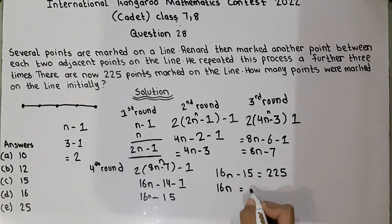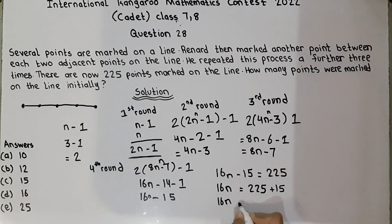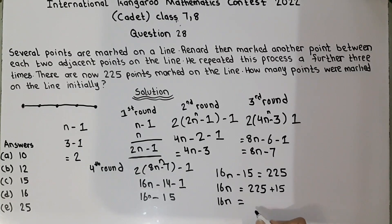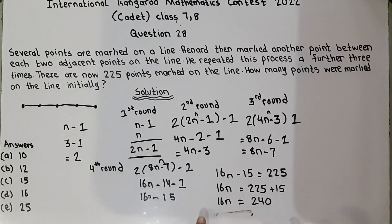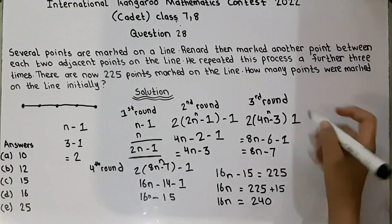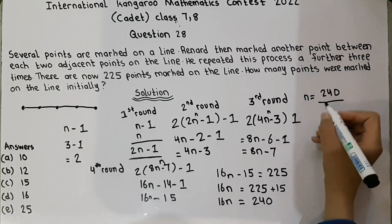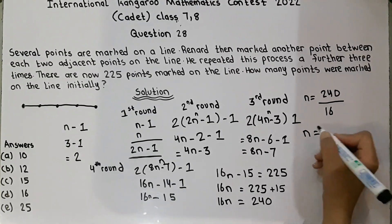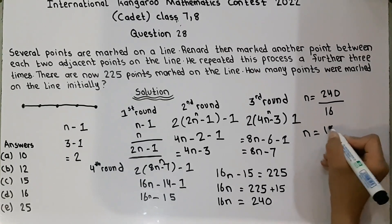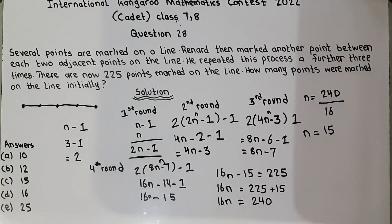Sixteen n equals 240. Therefore n equals 240 divided by 16, which equals 15. So the number of points marked on the line initially was 15.